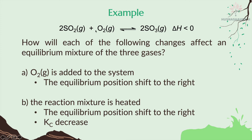A: When oxygen is added to the system — oxygen is a reactant. When it is added, you need to balance it back by decreasing the oxygen. In order to decrease the oxygen, you need to react it with SO₂ to form the product. So the equilibrium position shifts to the right.